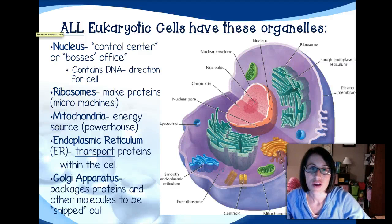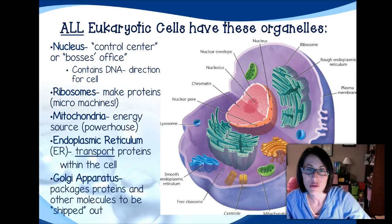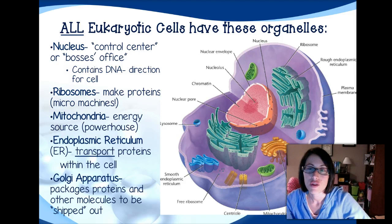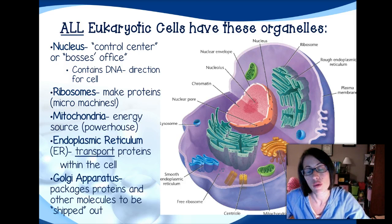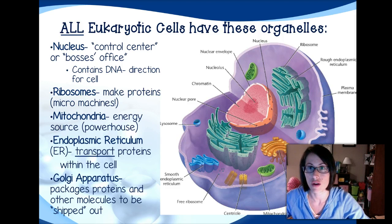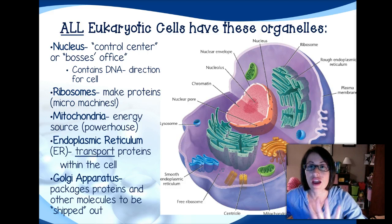Hi! Today we are going to be talking about all of the different and similar organelles that plants and animal cells have. If you remember what we talked about before, we talked about the difference between prokaryotes and eukaryotes. So today we're focusing just on eukaryotes, but I want you to remember the five things that every cell has in common.